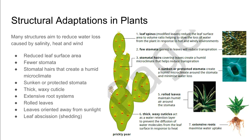Plants may also have thick waxy cuticles, extensive root systems, leaves that can roll, leaves that orient themselves away from sunlight, and shedding of leaves — all structural adaptations. We can see here on the right the example of a cactus, which does in fact have seven of those characteristics listed to the side.